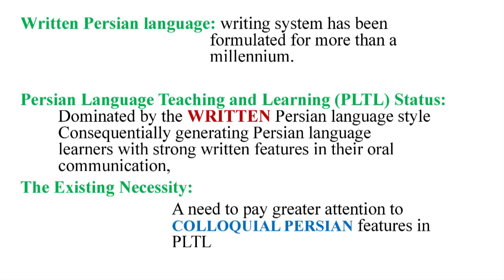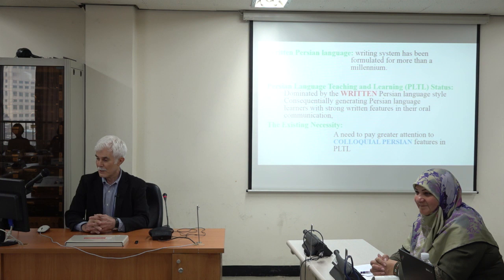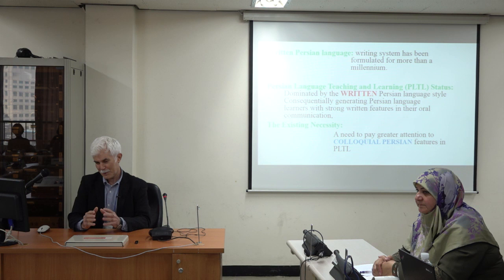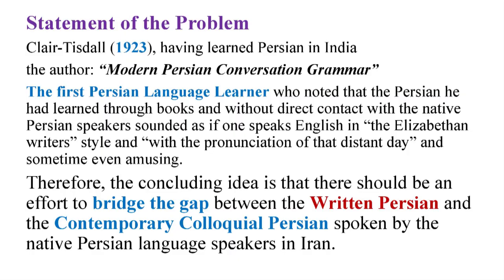Writing the Persian language system has been formulated for more than one millennium. One thousand years ago, Shahnameh was written with the Arabic alphabet in Persian. Therefore, this writing system has been in existence for so long a time, and it has been somehow controlling our way of speaking, while speaking has had its own efforts to change. The necessity arises from this introduction: we need to pay greater attention to colloquial Persian features in Persian language teaching and learning.